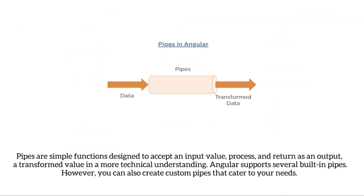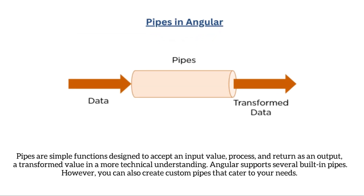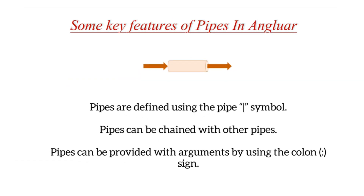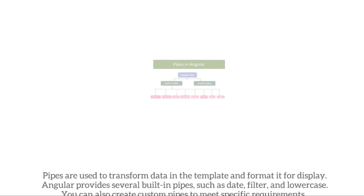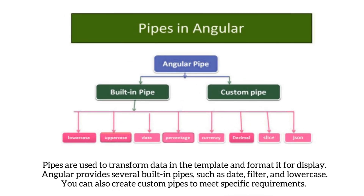Pipes are simple functions designed to accept an input, process it, and return a transformed value as output. Angular supports several built-in pipes, and you can also create custom pipes to cater to your needs. Key features of pipes: they are defined using the pipe symbol, can be chained with other pipes, and can be provided with arguments using the colon sign. Angular provides several built-in pipes such as date, filter, and lowercase. You can also create custom pipes to meet specific requirements.